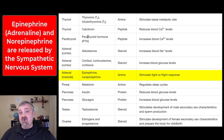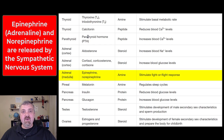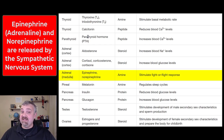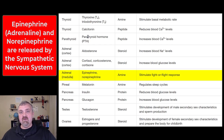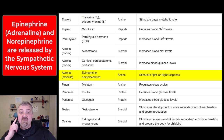The adrenal medulla — the center or core of the adrenal gland — is actually part of your sympathetic nervous system. It leads to the release of epinephrine and norepinephrine, also known as adrenaline and noradrenaline. These are two important hormones, especially in the acute early phases of the fight-or-flight response.